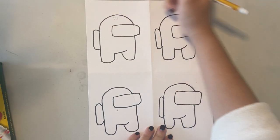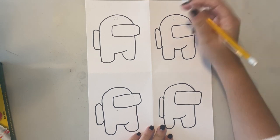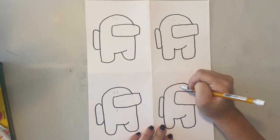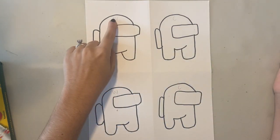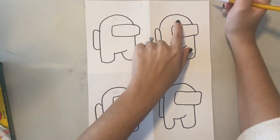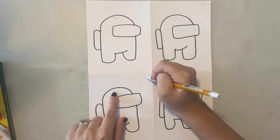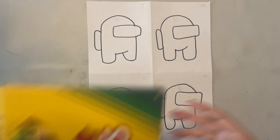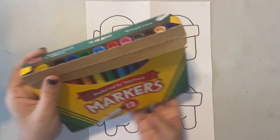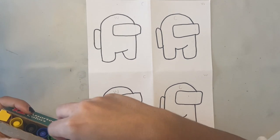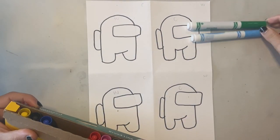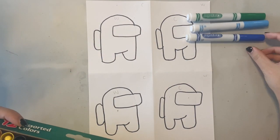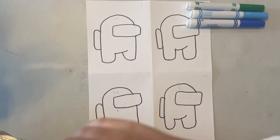For this assignment, I want you to color two Among Us characters with warm colors and two Among Us characters with cool colors. And color the background the opposite of what you colored your Among Us character. So if you colored your Among Us character with a warm color, then your background is going to be cool. If you colored your Among Us character with a cool color, your background is going to be warm.